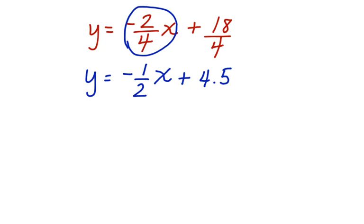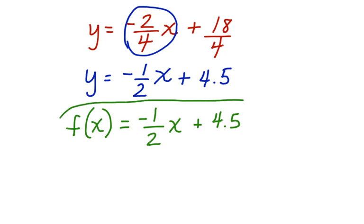Now we have an equation that is written in the correct form. It's in slope-intercept form. So now we can simply switch things around using function notation. y becomes a function of x equals negative 1 half x plus 4.5. This is the new form of the equation written using function notation.